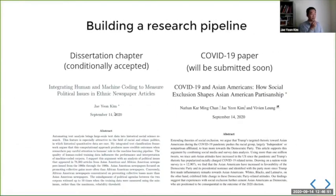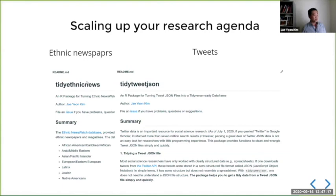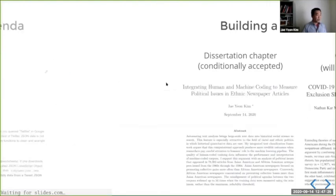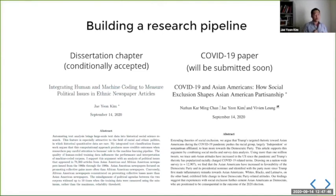This also happens to form a research pipeline. Working with ethnic newspapers was the basis of my dissertation project, and this chapter is now conditionally accepted at a computational social science journal. Now I'm working on a new project using ethnic newspapers not for descriptive inference but for causal inference. And the skill I developed for parsing ethnic newspaper data I used to develop another package that parses JSON tweet files into a dataset. Using that dataset, I developed a COVID-19 paper looking at the relationship between COVID-19 and Asian Americans — specifically how social exclusion shapes Asian American policy preferences — combining more than 1 million tweets and a large survey dataset.